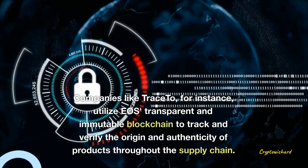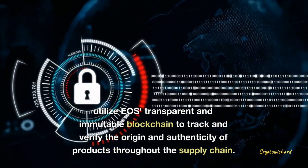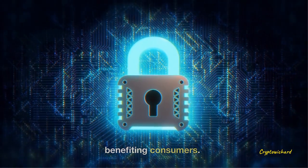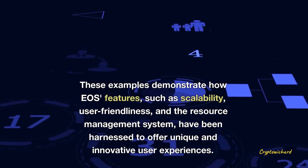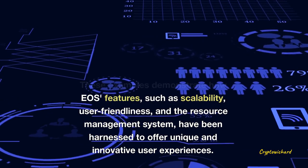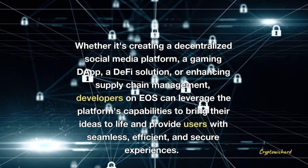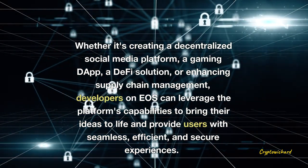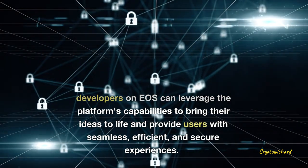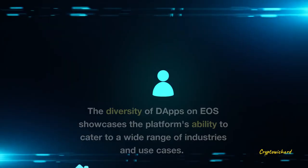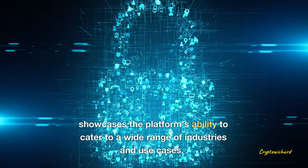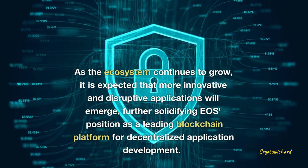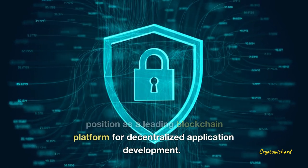Another notable use case on EOS is the development of supply chain management applications. Companies like Trace2, for instance, utilize EOS's transparent and immutable blockchain to track and verify the origin and authenticity of products throughout the supply chain, ensuring transparency and trust among stakeholders and ultimately benefiting consumers. These examples demonstrate how EOS features — such as scalability, user-friendliness, and the resource management system — have been harnessed to offer unique and innovative user experiences, whether it's a decentralized social media platform, a gaming dApp, a DeFi solution, or supply chain management.